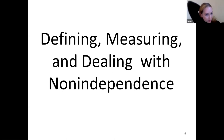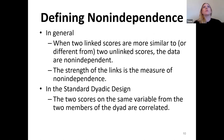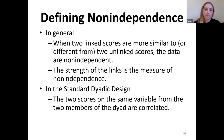When two linked scores are more similar to — or different from — two unlinked scores, the data are non-independent, and the strength of the link is really the measure of that non-independence. We have to use dyad as the unit of analysis because the dependent variables for the two people tend to be correlated with each other, and we need to adjust for that correlation. This is really at the heart of why we need to use multilevel modeling to analyze dyadic data.